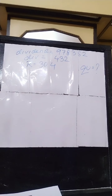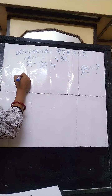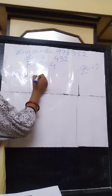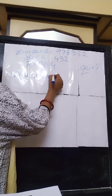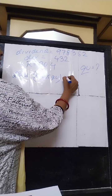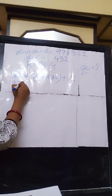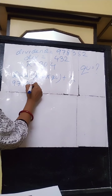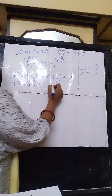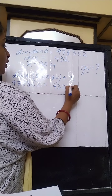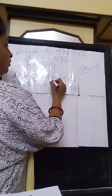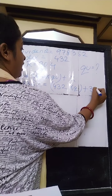The quotient is what you are required to find out. How will you find it? First, write the formula: dividend equals divisor into quotient plus remainder. Here, the dividend is 978352, the divisor is 432, the quotient is not given, but the remainder is given as 304.